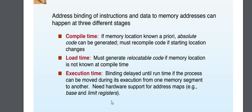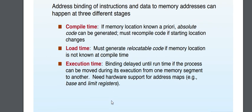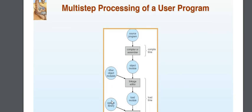This is a diagram of the multi-step process of a user program. First, we type the source code. Then we compile or assemble it, converting it to our system language — machine language. This creates an object module. Think of the object module like a book with attributes such as author and title.